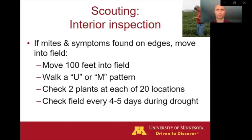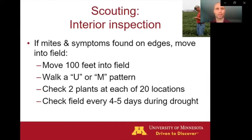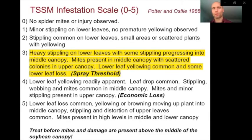So when we're scouting for two-spotted spider mites, if we start seeing infestations on the field edges — which is where they typically occur first — we want to move into the interior of the field and walk some kind of a pattern, maybe a U shape or an M shape to make sure we're getting good coverage of that field. We want to check multiple plants from throughout that field and do so every four to five days when we've got drought conditions, because these spider mites can increase their population so rapidly.